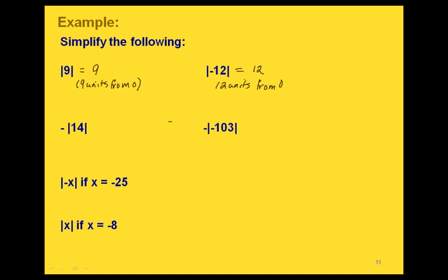Notice what we're doing: if we have a negative inside the absolute value bars, all that happens is the negative gets taken off. But what if we have a negative on the outside of the absolute value bars? We have to think about the order of operations — we find the value of the absolute value part first and then apply the negative. So we still have the negative out here, and the absolute value of 14 is 14 units from zero, which gives us 14. With the negative still out front, our answer is negative 14.